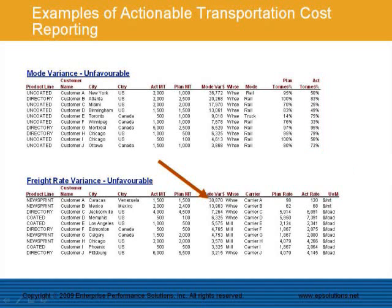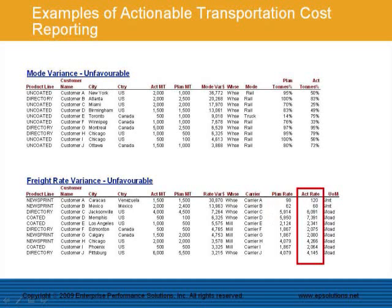For the unfavorable freight rate variance, the top contributor had a cost overrun of $30,800. This was caused by a significantly higher actual rate of $120 per metric ton shipped, versus $98 planned.